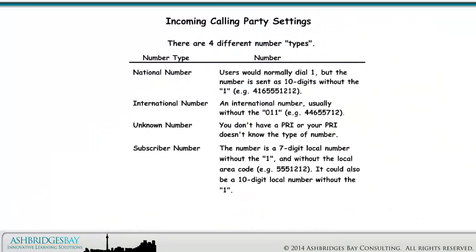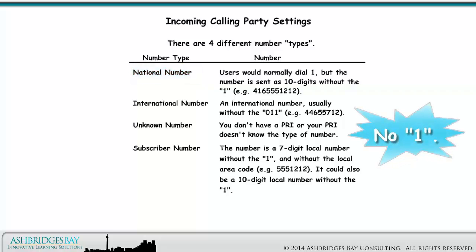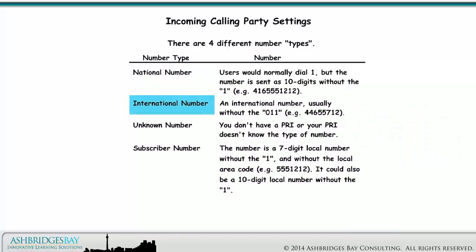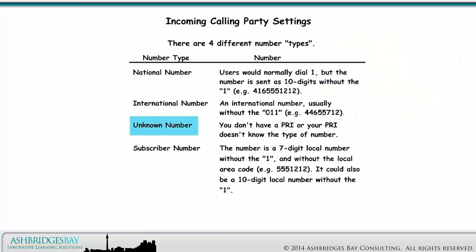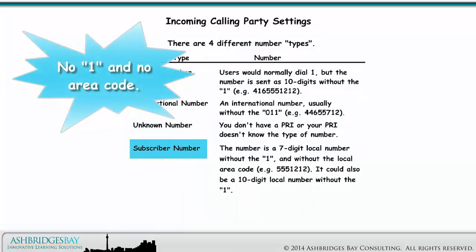There are four different number types. National number: users would normally dial 1, but the number is sent as 10 digits without the 1 — for example, 4165551212. International number: usually without the 011 — for example, 44655712. Unknown number: you don't have a PRI or your PRI doesn't know the type of number. And subscriber number: the number is a 7-digit local number without the 1 and without the local area code — for example, 5551212.